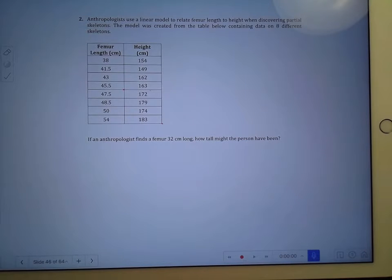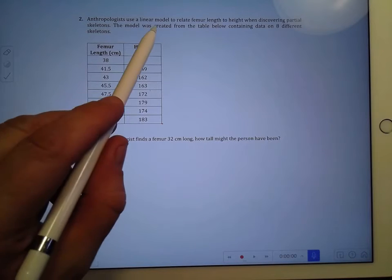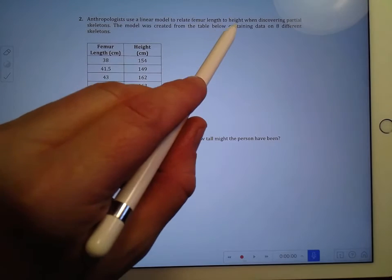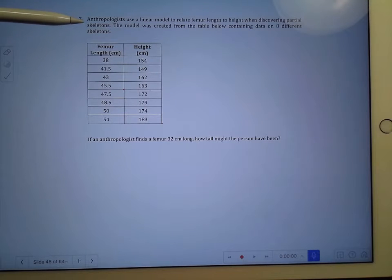Hey guys, this is Mayer line question number two. Anthropologists use a linear model to relate femur length to height when discovering partial skeletons, and the model was created from the table below containing data on eight different skeletons.